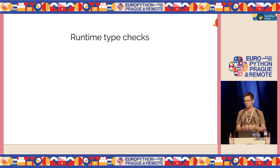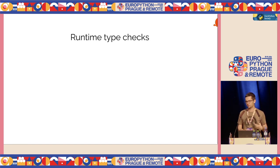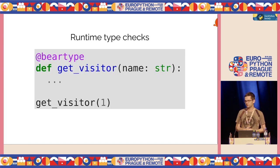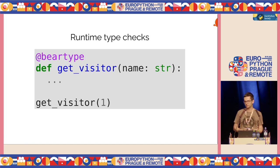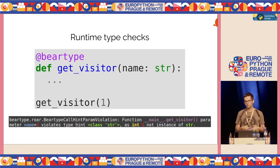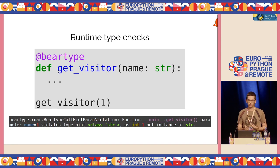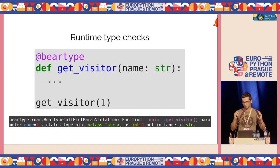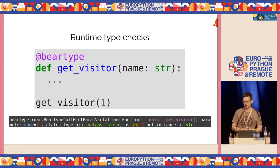If you want to move your type checking to another level, you can also do type checking at runtime. There's, for example, the beartype library that you can use to annotate your code, and it will type check your code as it is running — for example, if you have very dynamic code and normal type checkers aren't enough.